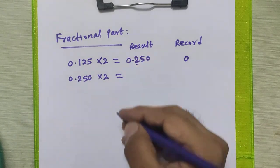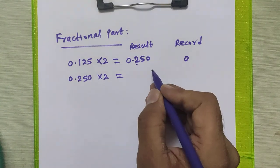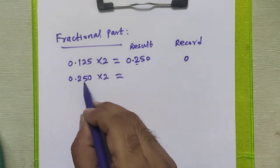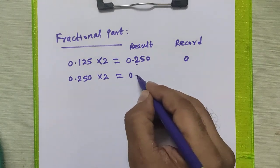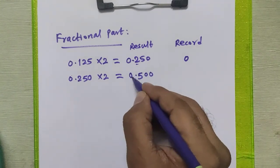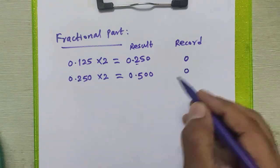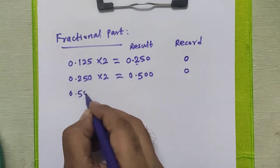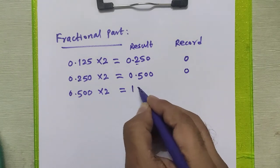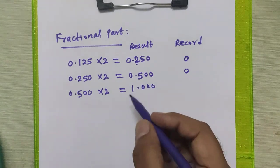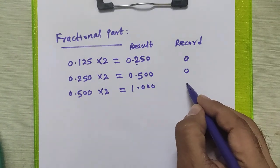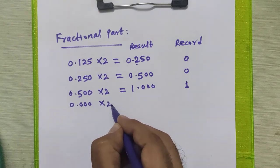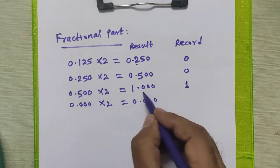We carry forward the remaining fractional part 0.250 for the further step and multiply it by 2 again. This process continues until the fractional part becomes 0. For 0.250 × 2 we get 0.500; we record the integral part 0 and carry forward 0.500. Multiplying 0.500 × 2 we get 1.000; we record 1 and carry forward the fractional part 0.000.